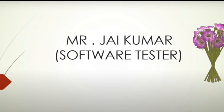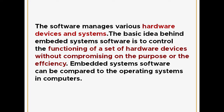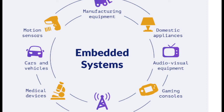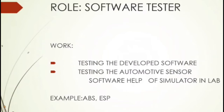This information is provided by our friend Mr. Jay Kumar, who is working as a testing engineer in a top leading MNC. First, what is an embedded system? Software manages various hardware devices and systems. The basic idea behind embedded system software is to control the functioning of a set of hardware devices without compromising the purpose or efficiency of the product. In simple terms, both software and hardware combined into a single product is called an embedded system. Best examples are digital cameras, digital wristwatches, calculators, washing machines, and more.